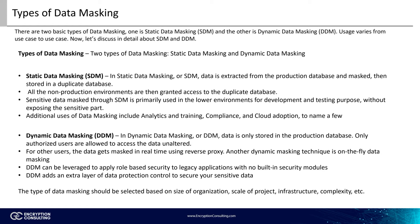In the case of DDM, only one database is maintained — the production database. However, with proper access control implemented, it only allows authorized users with valid credentials to fetch, alter, or add data. When any non-prod environment requests data, it performs data masking in real-time and returns the masked version of the data. In most cases it uses a technique called reverse proxy, while in other cases it might use on-the-fly data masking. The type of data masking should be selected based on the safety of the organization, scale of the project, infrastructure, and complexity.